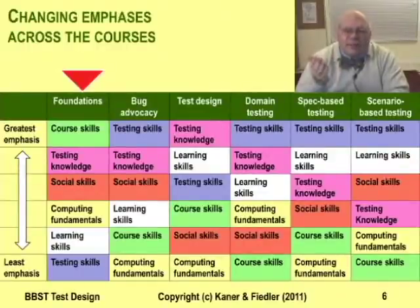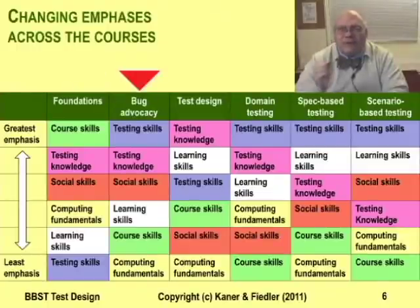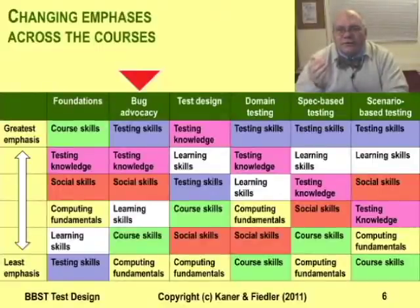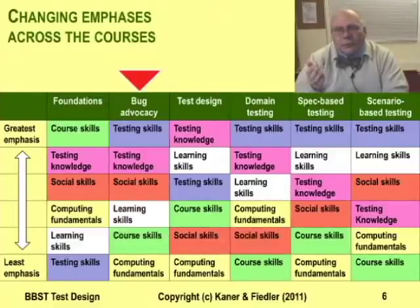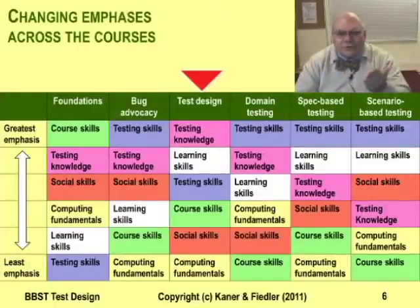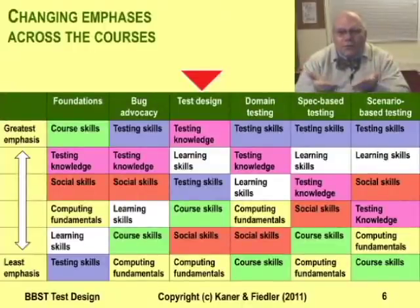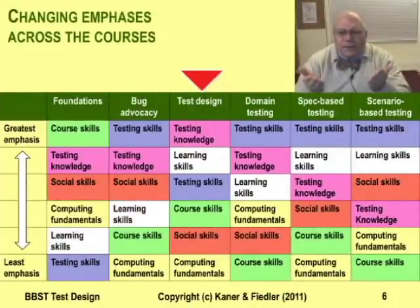We also covered a lot of basic testing and computer science knowledge. In the second course, we shifted gears to testing skills, in particular how to skillfully investigate and describe bugs. In the process, we taught a lot more about peer review, which shows up on this chart as skilled social interaction. This course is more focused on broadening your software testing knowledge. But as you'll see when we work with tours and specification-based testing, we're also interested in improving your active learning skills. We see active learning as essential for competent software testing and for surviving survey courses.